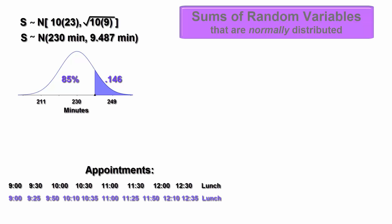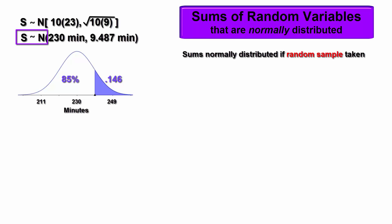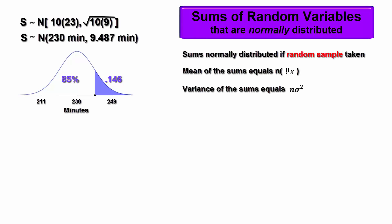Things to know regarding sums of random variables that are normally distributed: Sums will be normally distributed as long as samples are random and thus behave according to random chance. The mean of the sums will equal the sample size n times the mean of the random variable values — in our case, the sum of 10 times was 10 times 23 minutes. The variance will be n times the variance of the random variable — in our case 10 times 9 minutes — and the standard deviation will be the square root of n times the standard deviation, in our case 9.487 minutes.